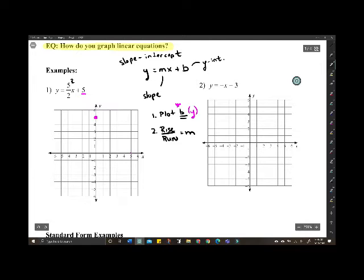That means you're going to rise five and run two. Now, we have a problem. We can't go up one, two, three, four, five, and over one, two. We could, but it's going to be a little challenging. So, instead, you can go down one, two, three, four, five, and to the left two. And then, you do that again.